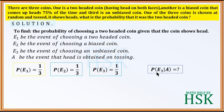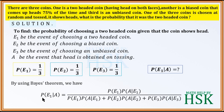We have to calculate P(E1|A) — the conditional probability of choosing a two-headed coin given that head is obtained on tossing. To solve this, we apply Bayes' theorem: P(E1|A) equals P(E1)·P(A|E1) divided by P(E1)·P(A|E1) + P(E2)·P(A|E2) + P(E3)·P(A|E3).